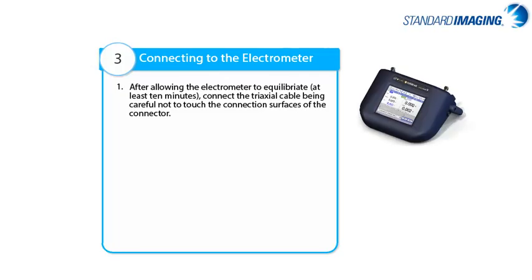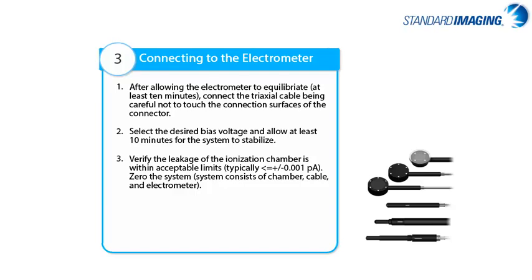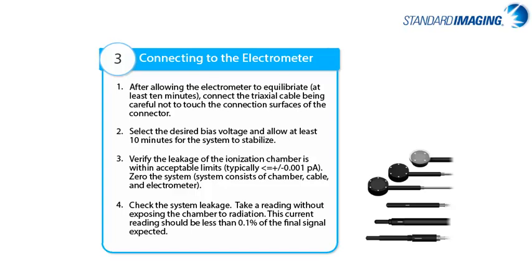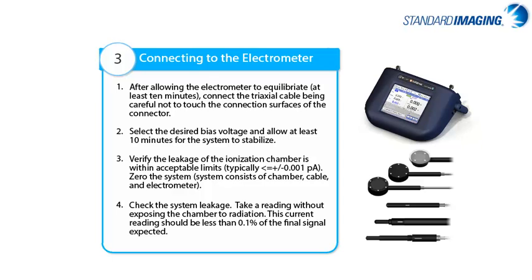After ensuring your chamber is set up correctly, as well as noting that any cables should be secure and not in the way of a rotating gantry, leave the room and connect the other end of the triaxial cable to the electrometer. Select your desired bias voltage and allow at least 10 minutes for the system to stabilize. Verify the leakage of the chamber is within acceptable limits. If your leakage is above the expected limits, remove the bias on the chamber and test the leakage of each system component separately — the electrometer, cable, and chamber — as discussed in Part 1. If or once your system is stable, go ahead and zero it.